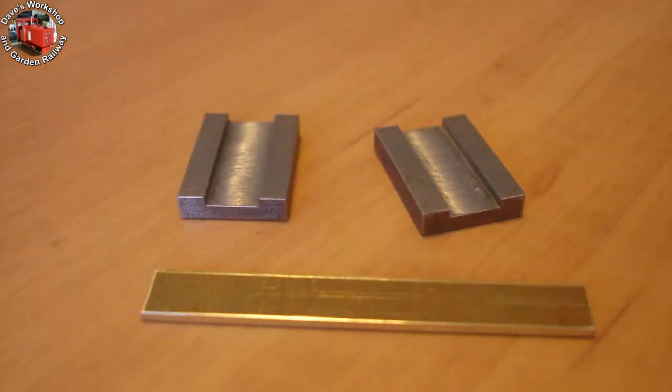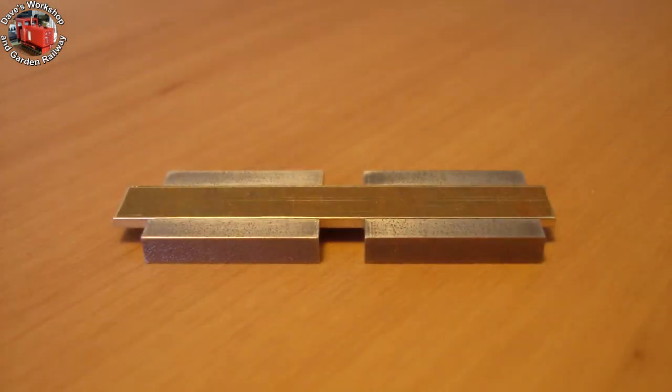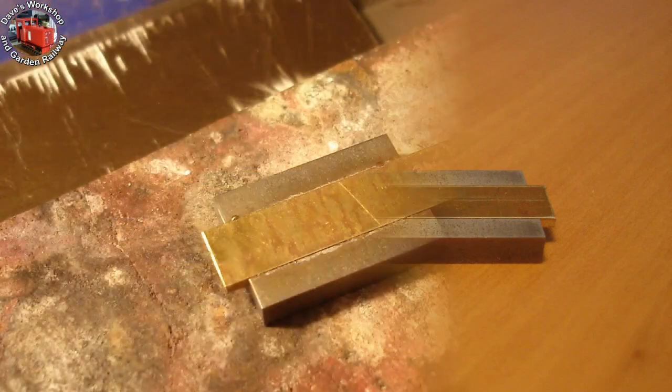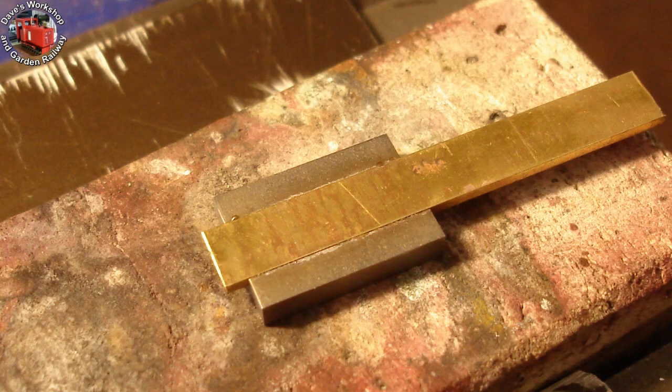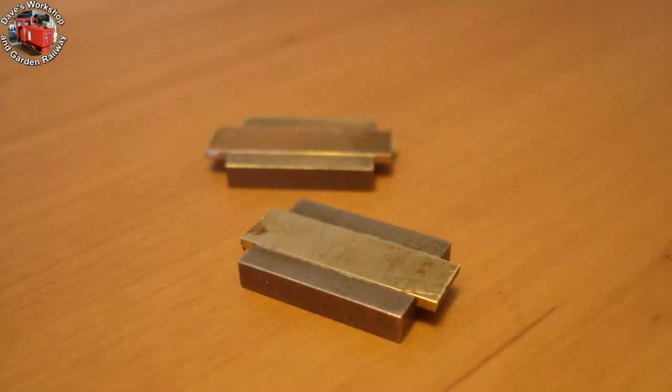I decided to line the cross head caps with a brass liner. 1 eighth inch steel strip used and 1.2 mil thick brass sheet. The channels were milled out with a 1 quarter inch slot drill. The brass and steel parts were tinned with solder then sweated together using the butane blowtorch. Brass strips cut off ready for trimming to length.